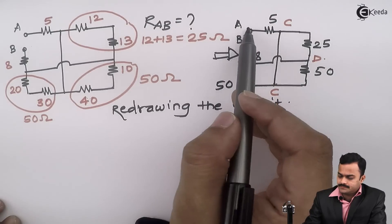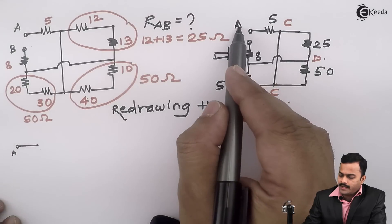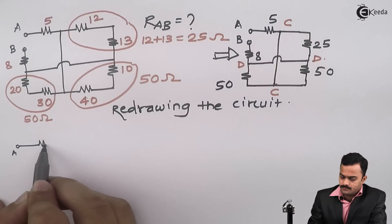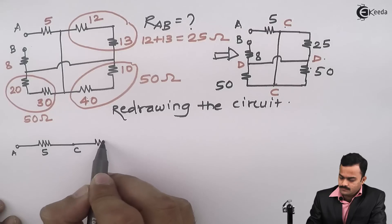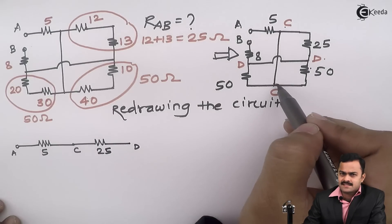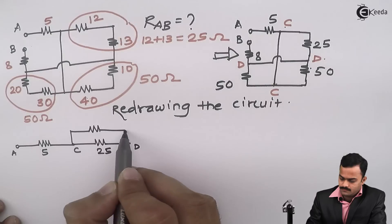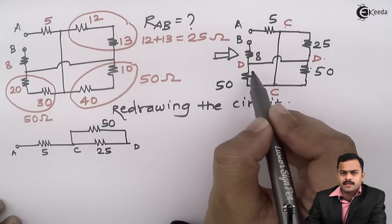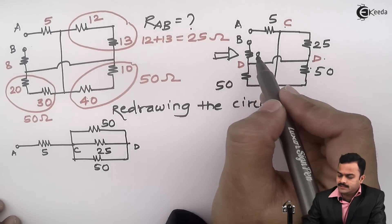I will start with A. From A to C there is 5 ohm. From C to D there is 25 ohm. From D to C, which I can say C to D, there is 50 ohm. From C to D one more 50. And from D to B there is 8 ohm.